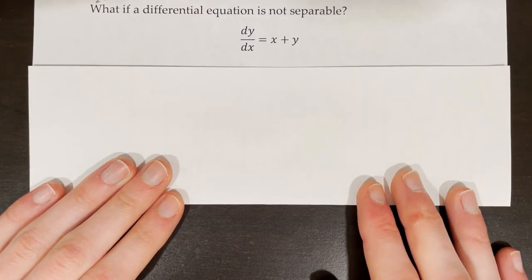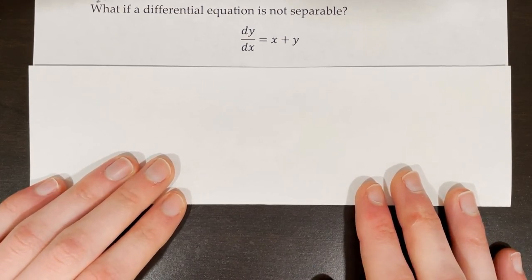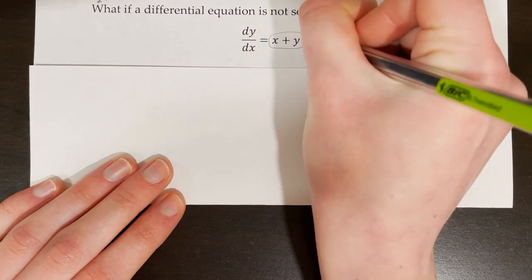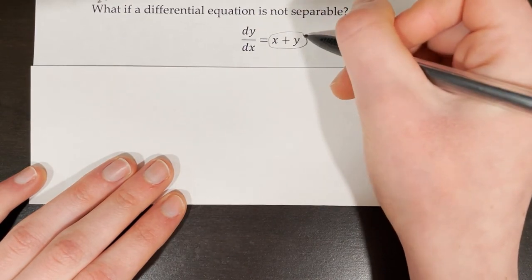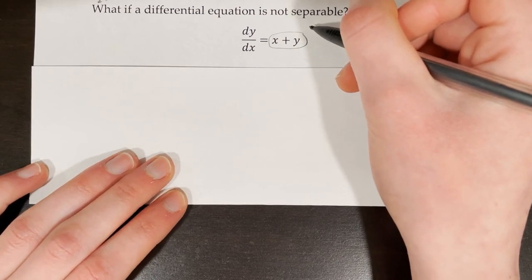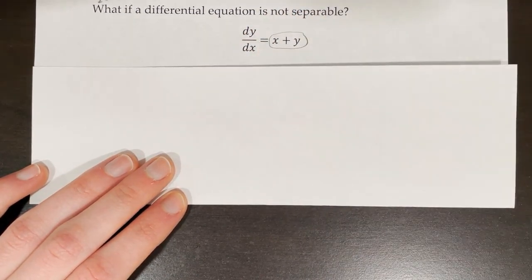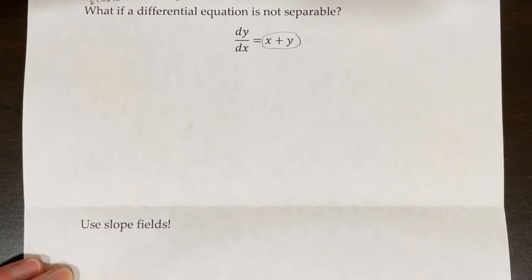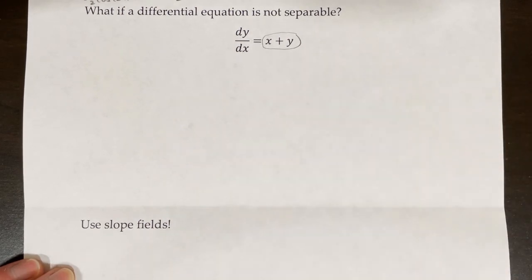The last thing to briefly consider is what if a differential equation is not separable. For instance, dy/dx = x + y is not separable — there's nothing we can multiply or divide both sides by, because we have a function in terms of x plus a function in terms of y, not multiplied. In that case, we cannot use separation of variables. Instead, we would use slope fields, covered in a previous video on 7.3 and 7.4, to get an idea of what that equation looks like.